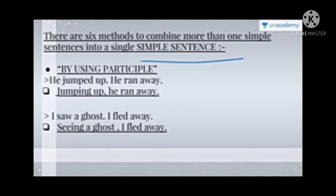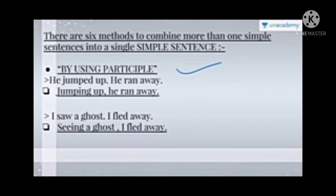The first method is by using a participle. A participle is a word made from a verb — it is a form of verb used either as an adjective or as a noun in a sentence. For example: 'He jumped up. He ran away.' Combined using a participle: 'Jumping up, he ran away.' Another example: 'I saw a ghost. I fled away.' Combined: 'Seeing a ghost, I fled away.'